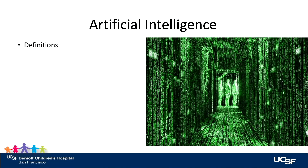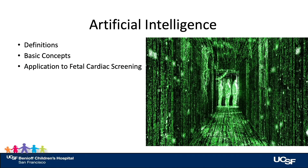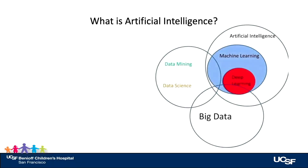First I want to give you some definitions and basic concepts and then show you how it may apply to fetal cardiac screening, and finally talk a little bit about challenges for the future. So what is artificial intelligence? This is a little controversial, but most people agree with some version of this Venn diagram where artificial intelligence is sort of all of it, and machine learning and then deep learning is a subset of machine learning.